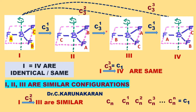On another C3 rotation, we get a configuration through anticlockwise: B comes here, E comes here, A comes here. Another C3 rotation gives configuration 4. If you look at configurations 1 and 4, they are identical — same configuration. C3³ is nothing but equal to C1; therefore there are only two unique C3 axis operations, C3¹ and C3². C3³ is C1, which is 360 degree rotation.